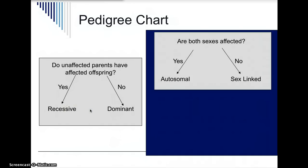The second thing you want to look at is whether the trait is autosomal or sex-linked. You want to see if both sexes are affected by that trait. If both sexes have the trait, then the trait is autosomal, which means it's on chromosomes 1 through 22. If only men have the trait, then the trait is sex-linked.